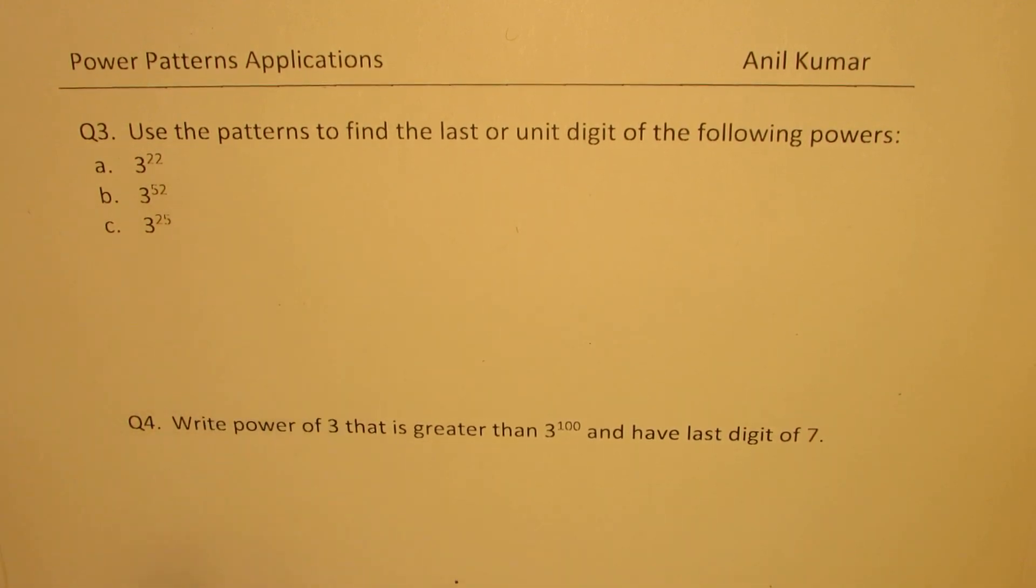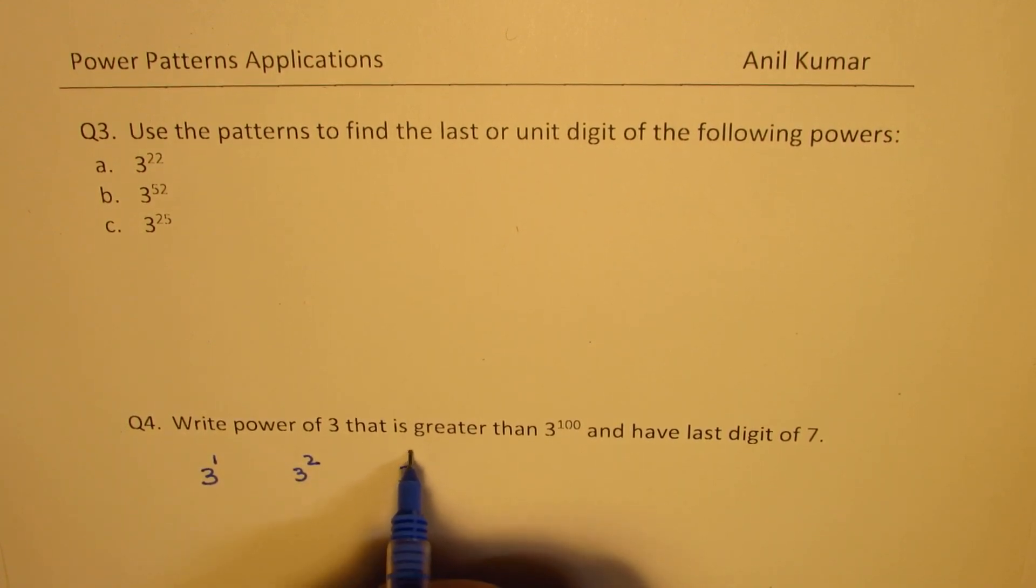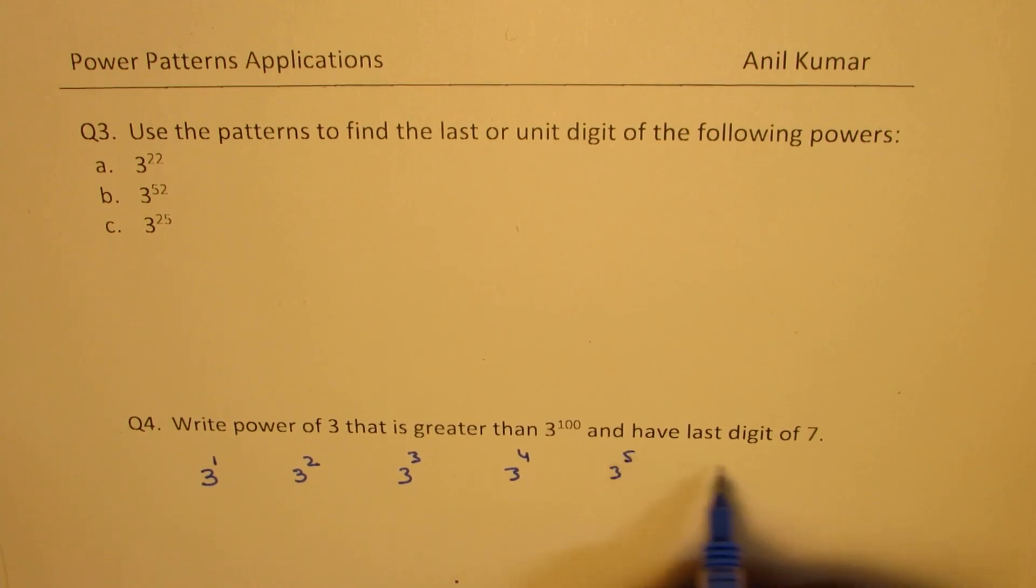Now, let us check the pattern rule by writing what are the values for 3 to the power of 1, 3 to the power of 2, 3 to the power of 3, 3 to the power of 4, 3 to the power of 5, 3 to the power of 6, and so on.